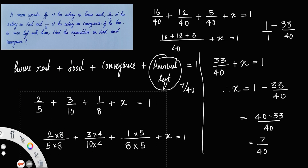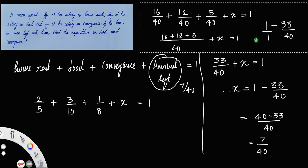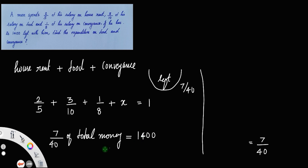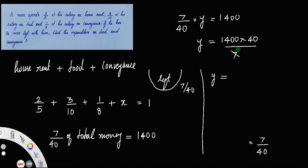It is given that the amount left is 1400 rupees. So 7/40 of his total salary y equals 1400, meaning 7/40 × y = 1400. Therefore y = 1400 × 40/7. Cancelling, 1400 ÷ 7 = 200, and 200 × 40 = 8000. So the total salary is 8000 rupees.